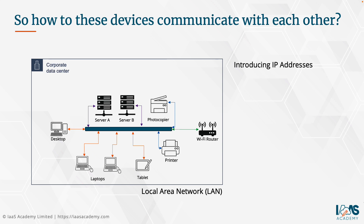The next thing we need to look at is how these devices — desktops, laptops, servers, printers and photocopiers — actually communicate with each other. That's where I'd like to introduce you to the concept of IP addressing, which is a critical element in enabling these devices to talk to each other. Understanding how IP addressing works will help you design, architect and build your virtual private cloud on the AWS platform.